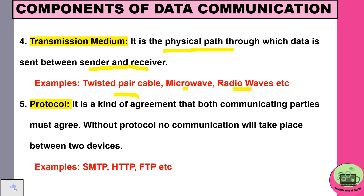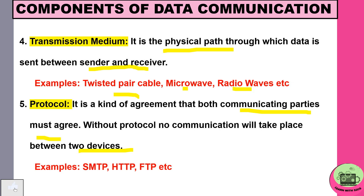The last one is protocol. It is a kind of agreement that both communicating parties must agree to. The sender and receiver are the communicating parties, and they have to agree to a certain set of rules. Without protocol, no communication will take place between the two devices. Examples include SMTP (Simple Mail Transfer Protocol), HTTP (Hypertext Transfer Protocol), and FTP (File Transfer Protocol).